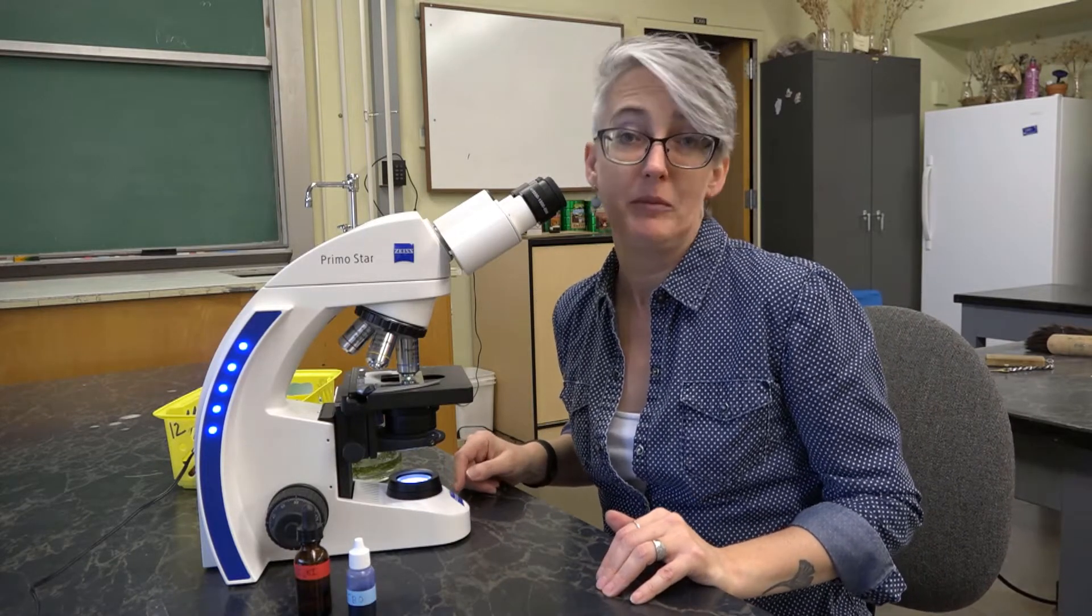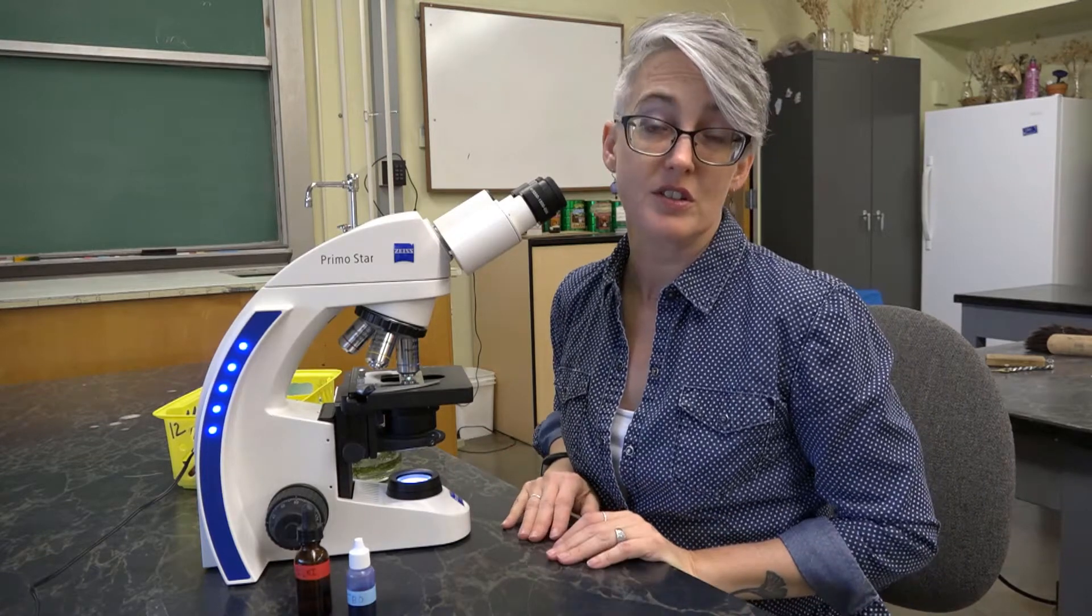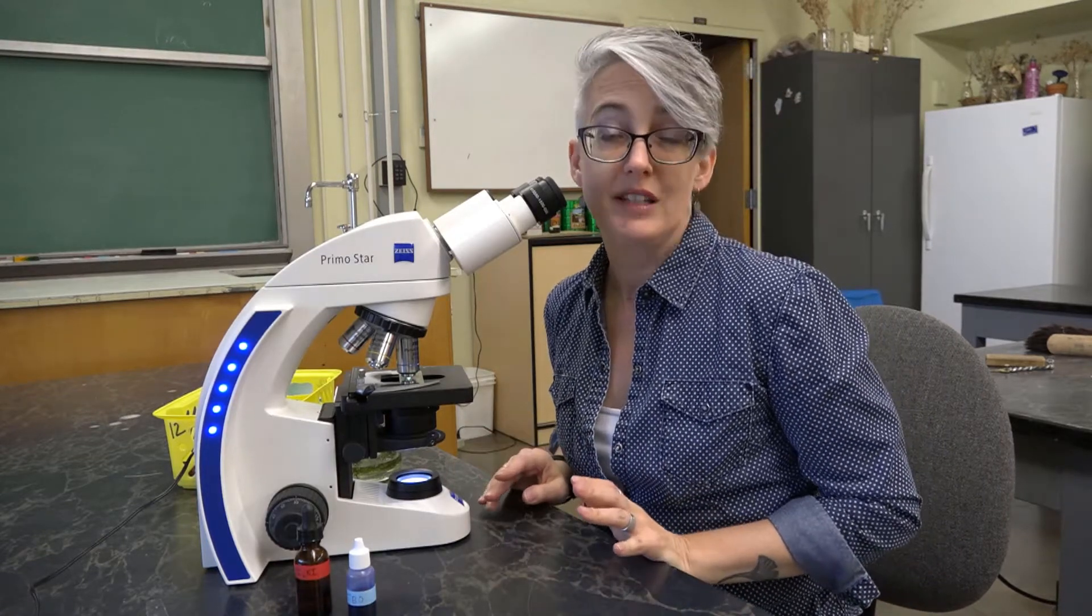Plants are amazing to look at underneath a microscope. And because of their naturally occurring pigments, such as the chlorophylls, the carotenoids, and anthocyanins, you can observe them under the scope and see lots of detail even without a stain.